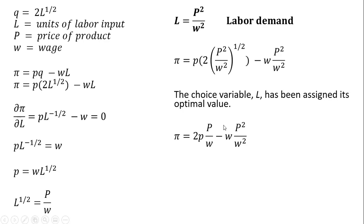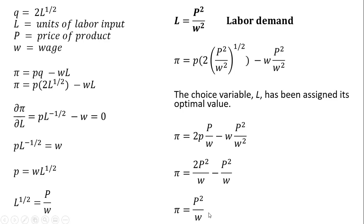This simplifies down to the following. We have P times P, giving us P², and W divided by W² leaves W in the denominator. So our indirect profit function is P² / W, which is just a function of the exogenous variables — the variables outside the firm's control.